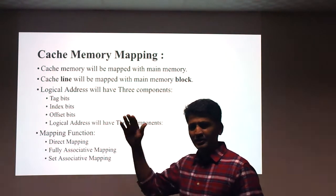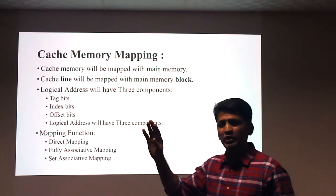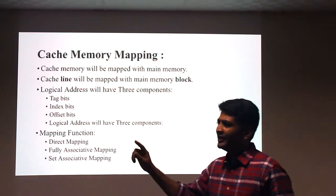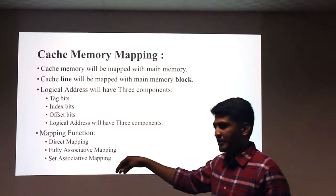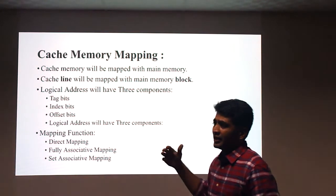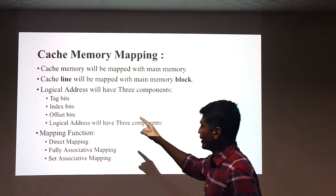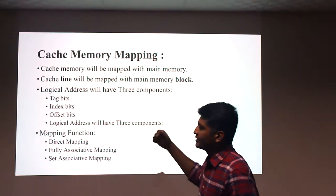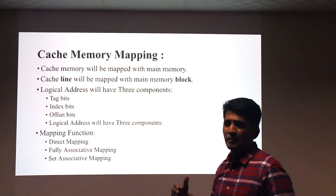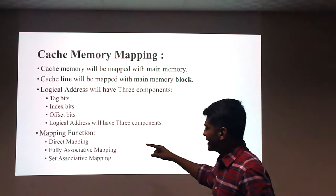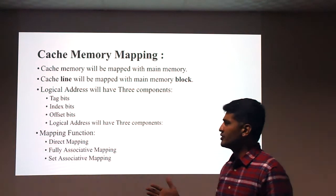For cache memory mapping, the processor generates a logical address which is mapped to a physical address via the MMU to identify the exact data location. The logical address has three components: the tag bit, the index bit, and the offset bit. There are three major mapping functions: direct mapping, fully associative mapping, and set associative mapping.